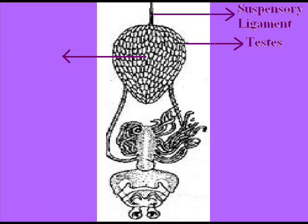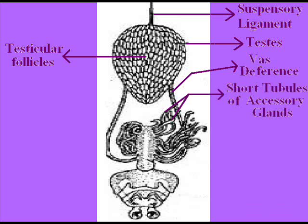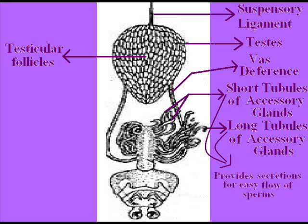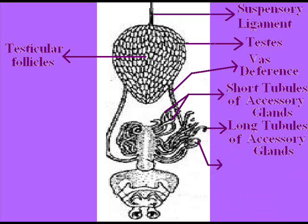This is the long genital duct, which is the vas deferens. These are the short tubules of accessory glands, and the lower portion shows the long tubules of accessory glands. Both types of glands provide secretions for easy flow of sperms.